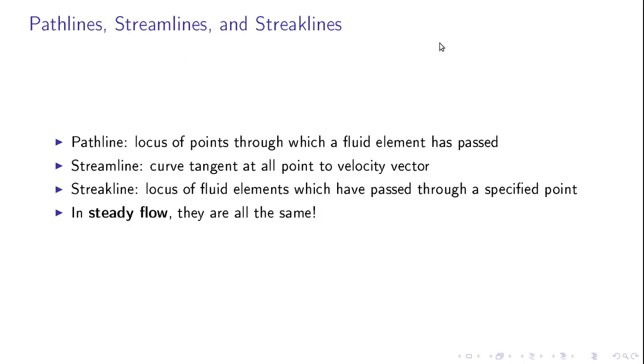Finally, the concepts of pathlines, streamlines, and streaklines are important. A pathline is just a locus of points through which a fluid element has passed. A streamline is a curve that's everywhere tangent to the velocity vector. And a streakline is the locus of fluid elements which has passed through a specified point. Now again, in this course we're only interested in steady flow, and the great news is that in steady flow all of these are exactly the same thing, and typically we'll talk about streamlines.